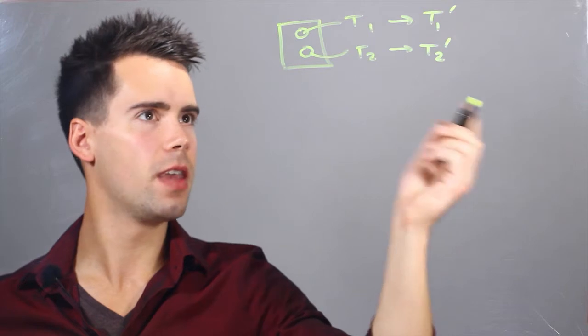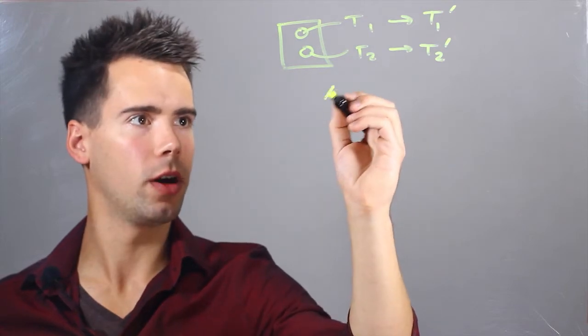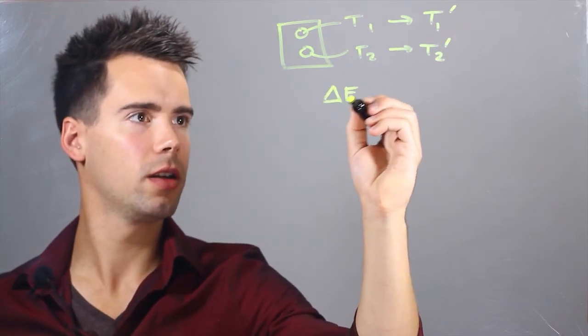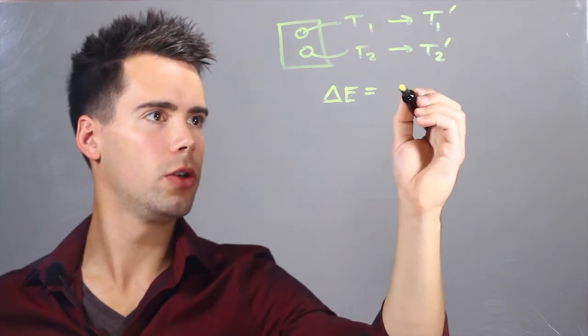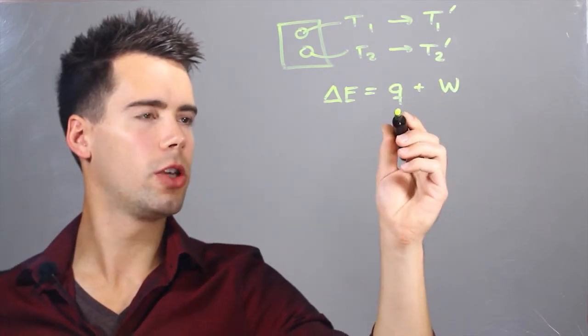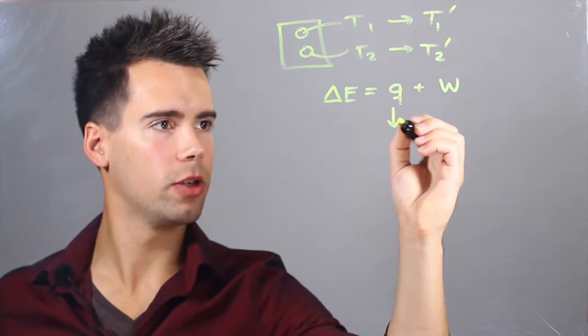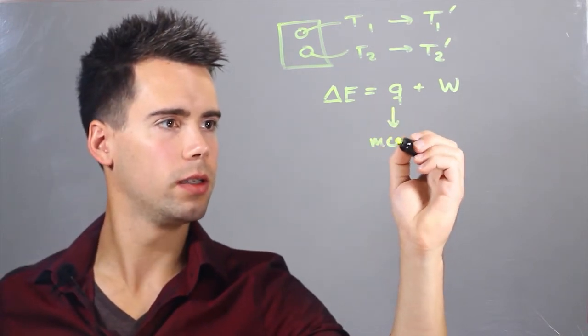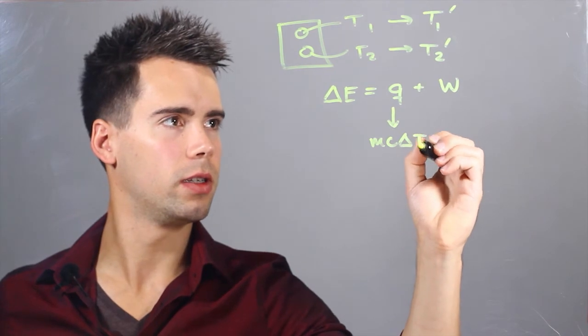So now if we want to find the energy going into the process, we can use the equation change energy equals Q plus W. Now what is Q and W? So Q is the heat that goes into a system, and the equation is MC delta T.